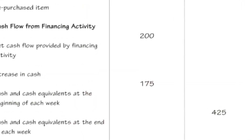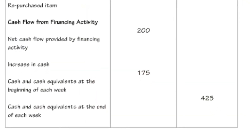Last but not least, we have cash flow from financing activity, where the net cash provided by financing activity is 200 ringgit for week 1. We also have a net income of 175 ringgit for week 1 and 425 ringgit for week 4.